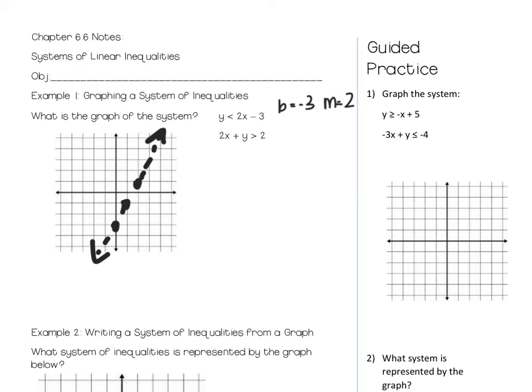Then I'm going to go ahead and shade it. It's less than, so I'm going to shade below the line. And then let's graph, that's the first one's graphed, let's graph the second one.